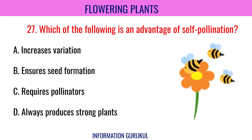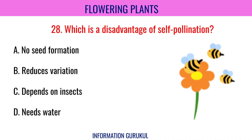Which of the following is an advantage of self-pollination? Ensures seed formation. Which is a disadvantage of self-pollination? Reduces variation.